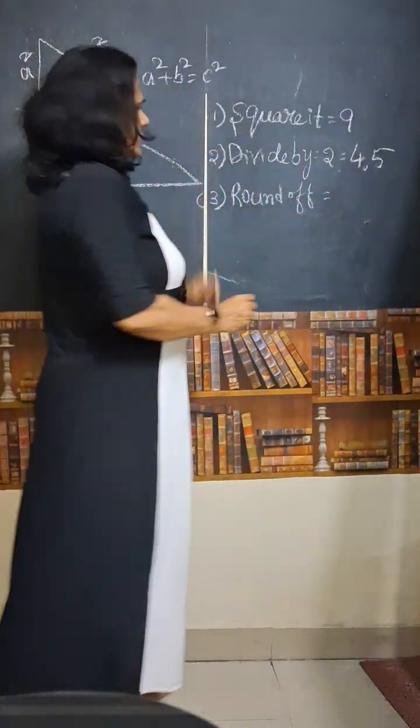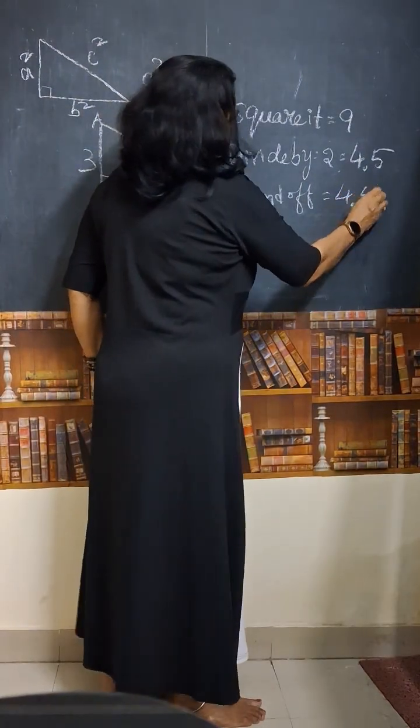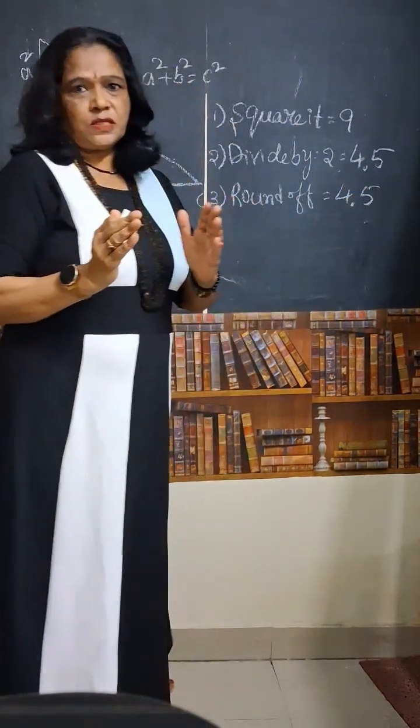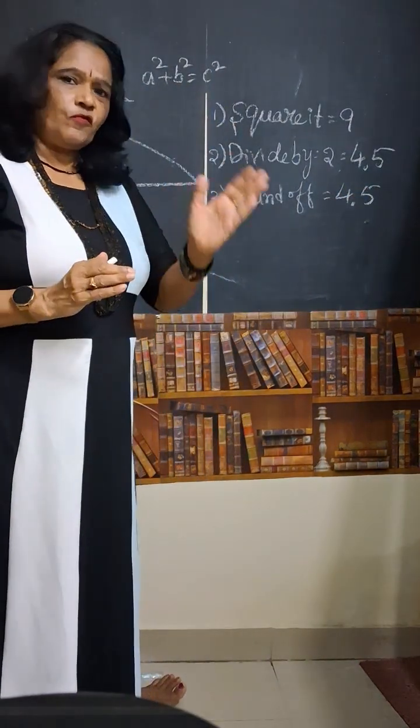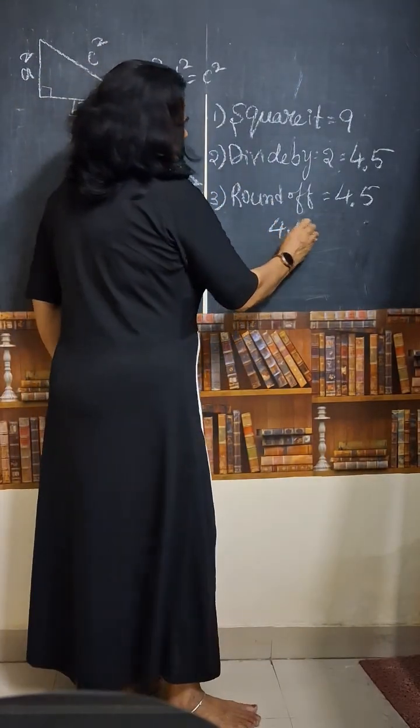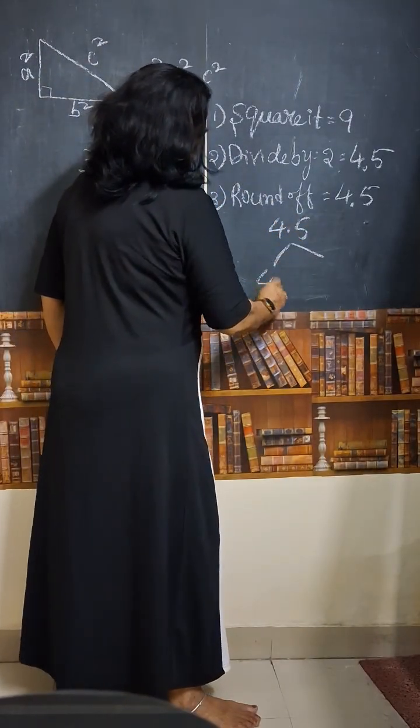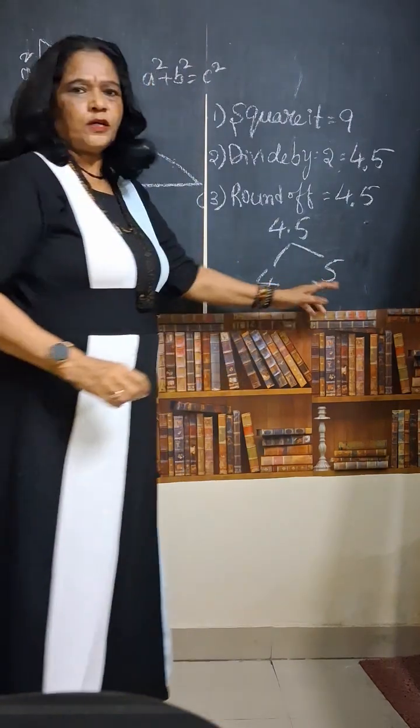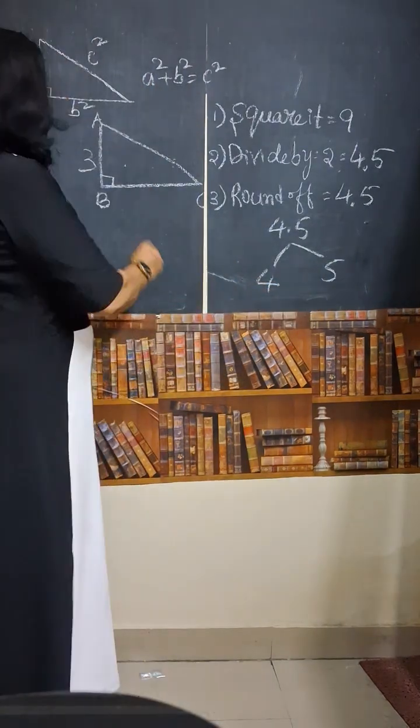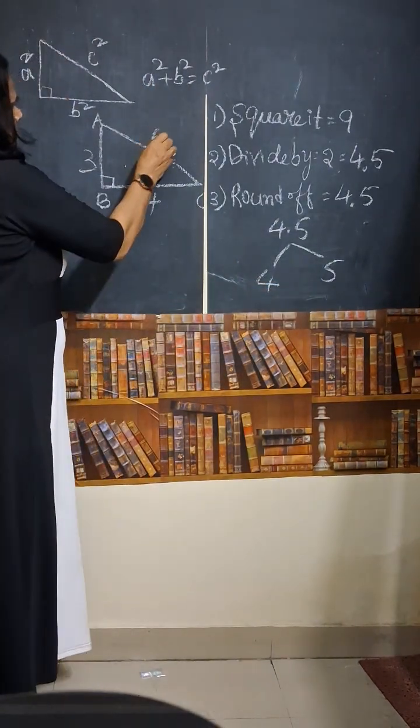Round off. Round off this four point five. Four point five is in between these two numbers, four and five. Here we got two numbers. These two are the sides. This is four, this is five.